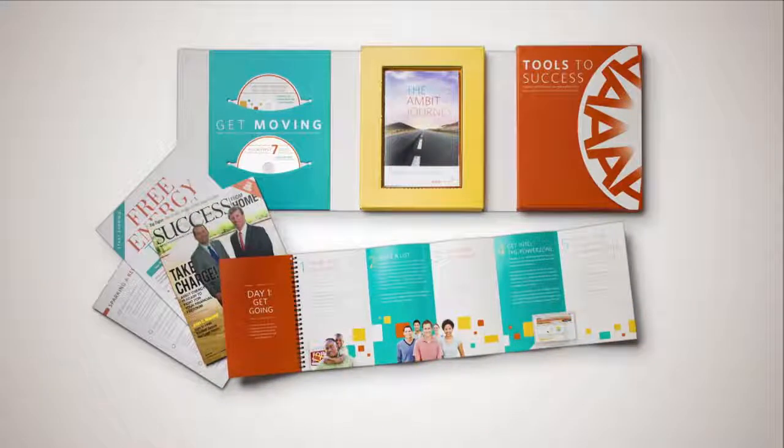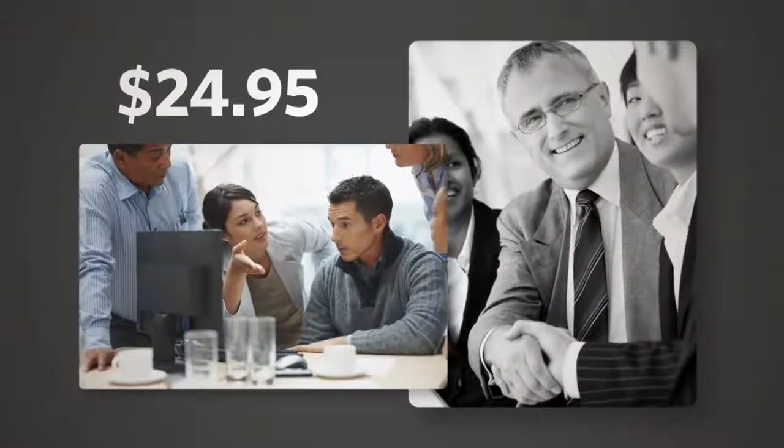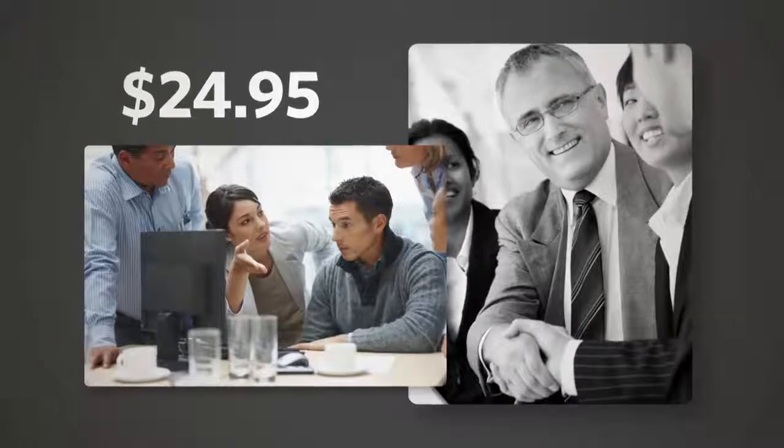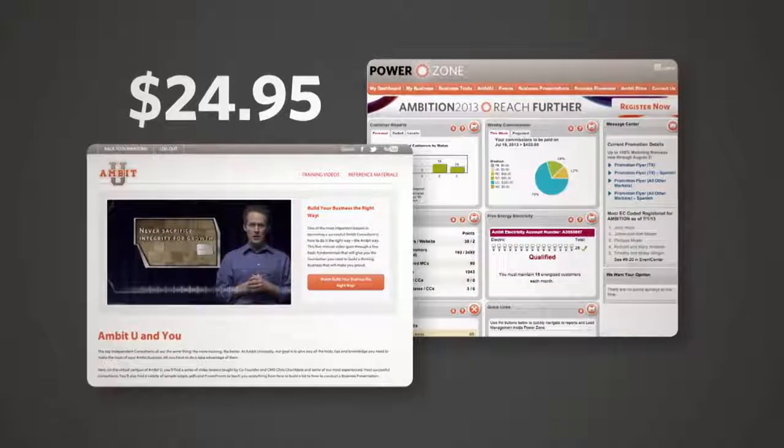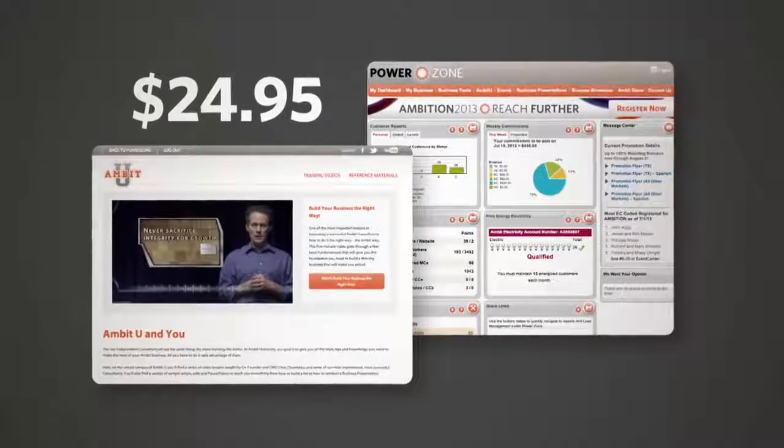All this earning begins with a small one-time fee, which gives you the tools and information you need to start building your Ambit business right away. And for only $24.95 a month, you'll gain access to everything you need to maximize and manage your business, including customer management software, training websites, accounting tools, and much more.